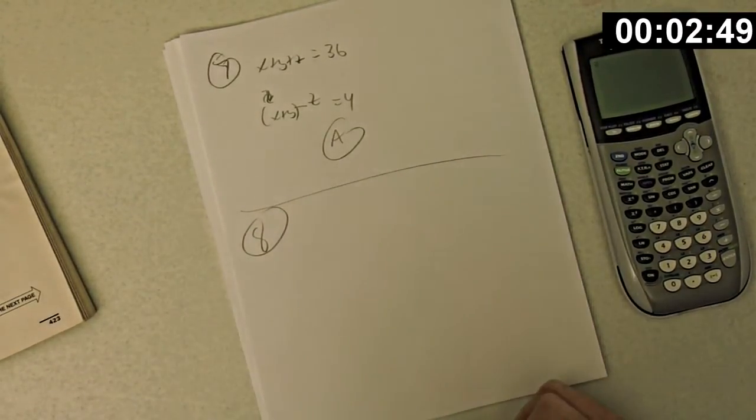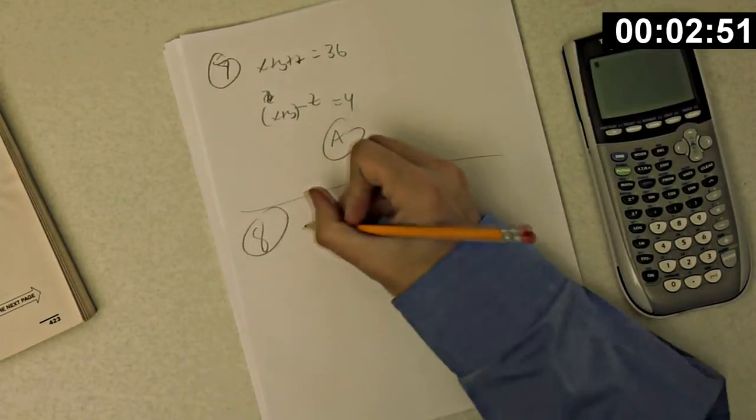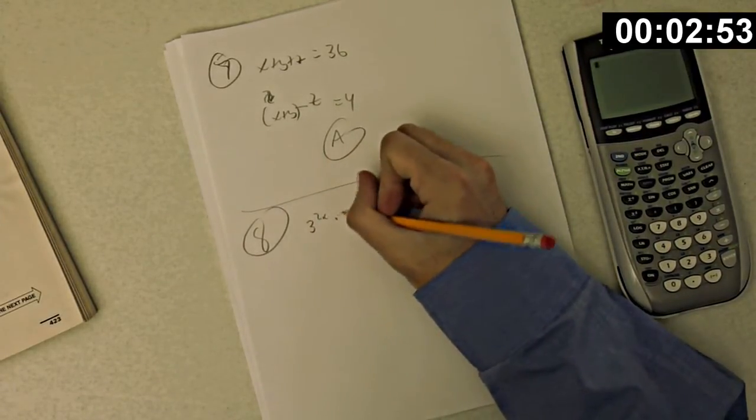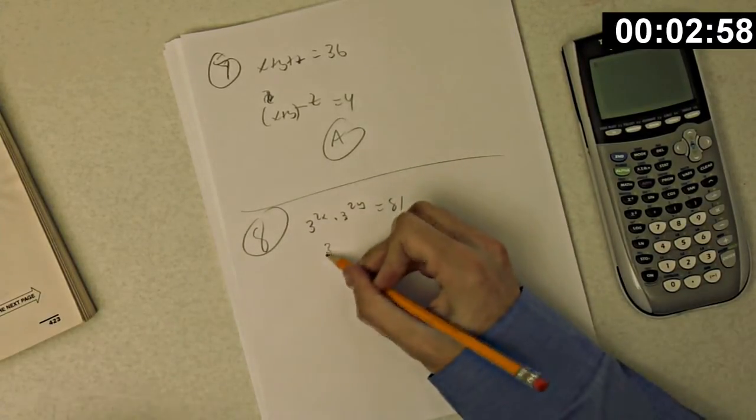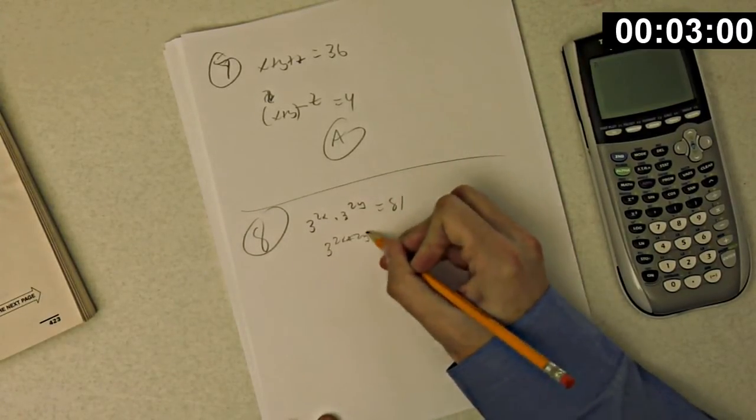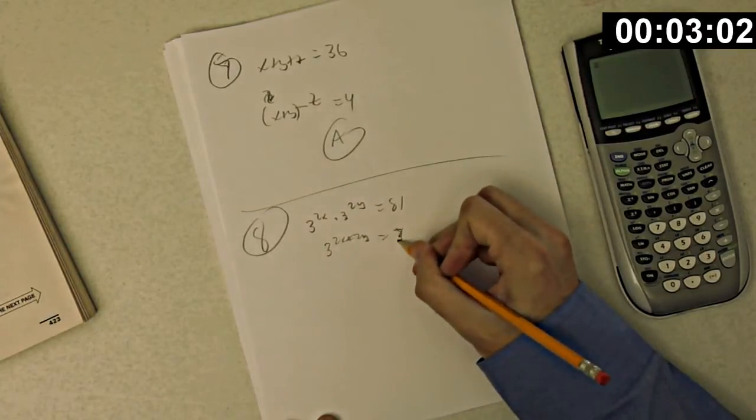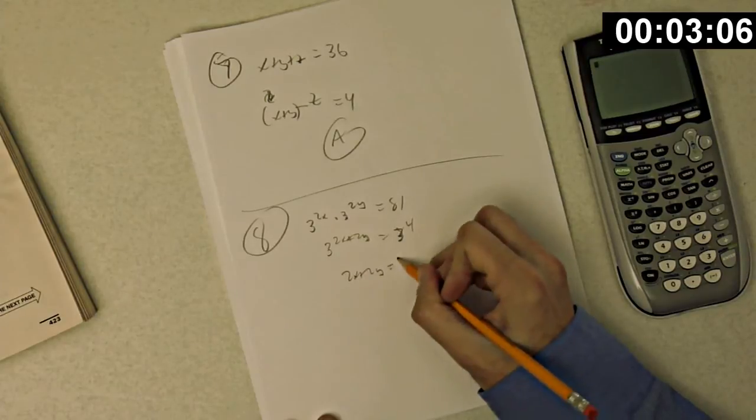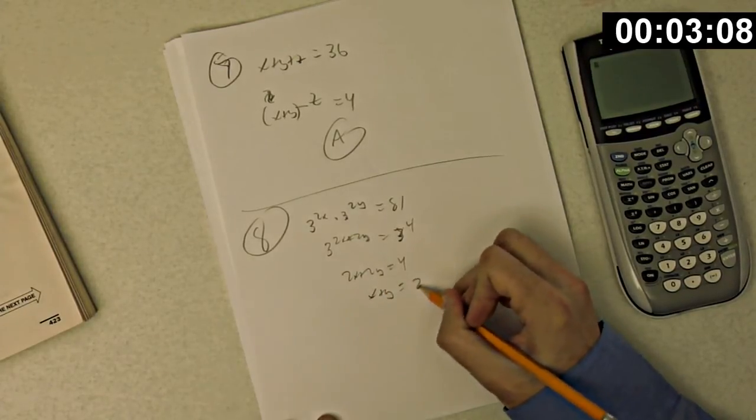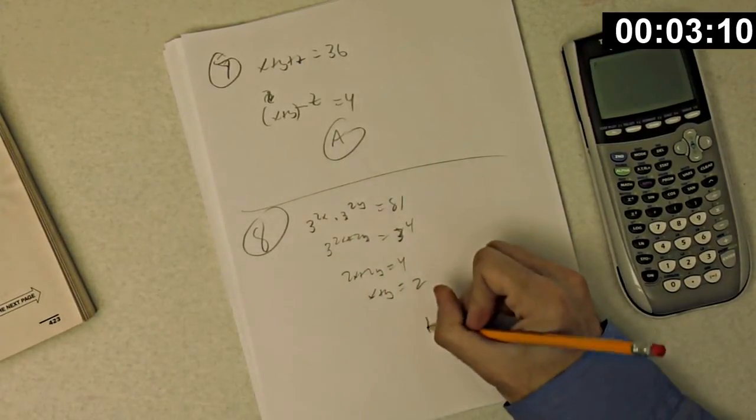Okay, number eight. If x and y are positive integers and 3 to the 2x times 3 to the 2y equals 81, what is the value of x plus y? Okay, so 3 to the 2x plus 2y is 3 to the 4th. So 2x plus 2y is 4 and x plus y is 2. That's choice B.